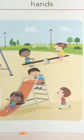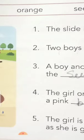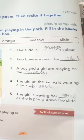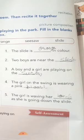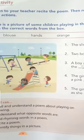Now you have to fill in the blanks. Take out your book and open this page. First: the slide is dash in color. What is the color of the slide? That is orange. You can see the orange color slide.